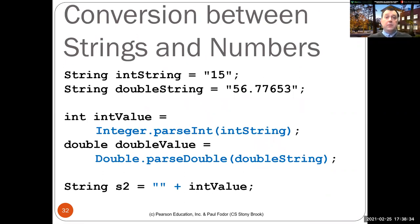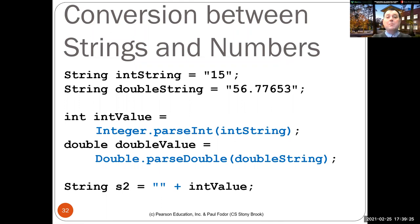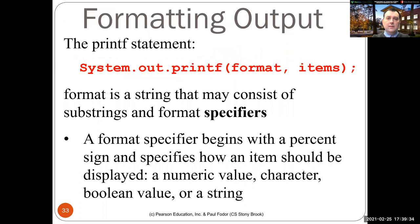Converting between strings and numbers: Integer.parseInt(intString) parses a string like "15" to an int. Double.parseDouble(doubleString) parses "56.7765" to a double. Going the other way — converting an int or double to a string — the easiest way is to concatenate with an empty string: the weak typing will convert it to a string automatically without needing an explicit method call.